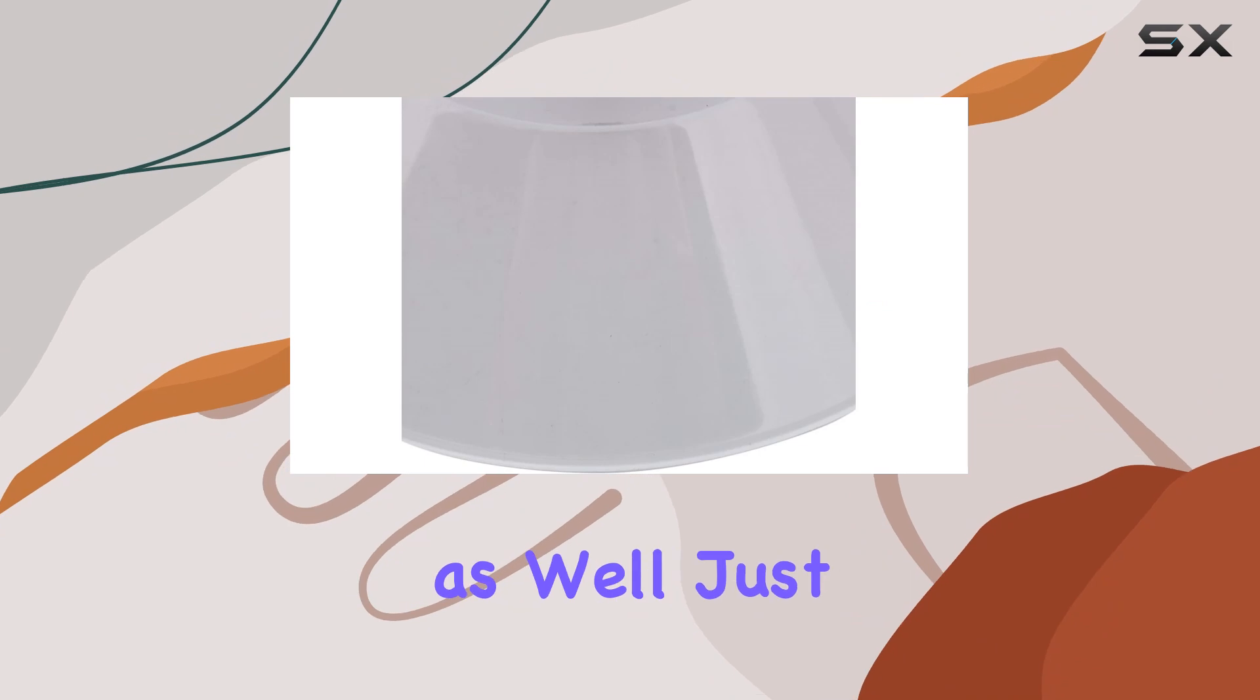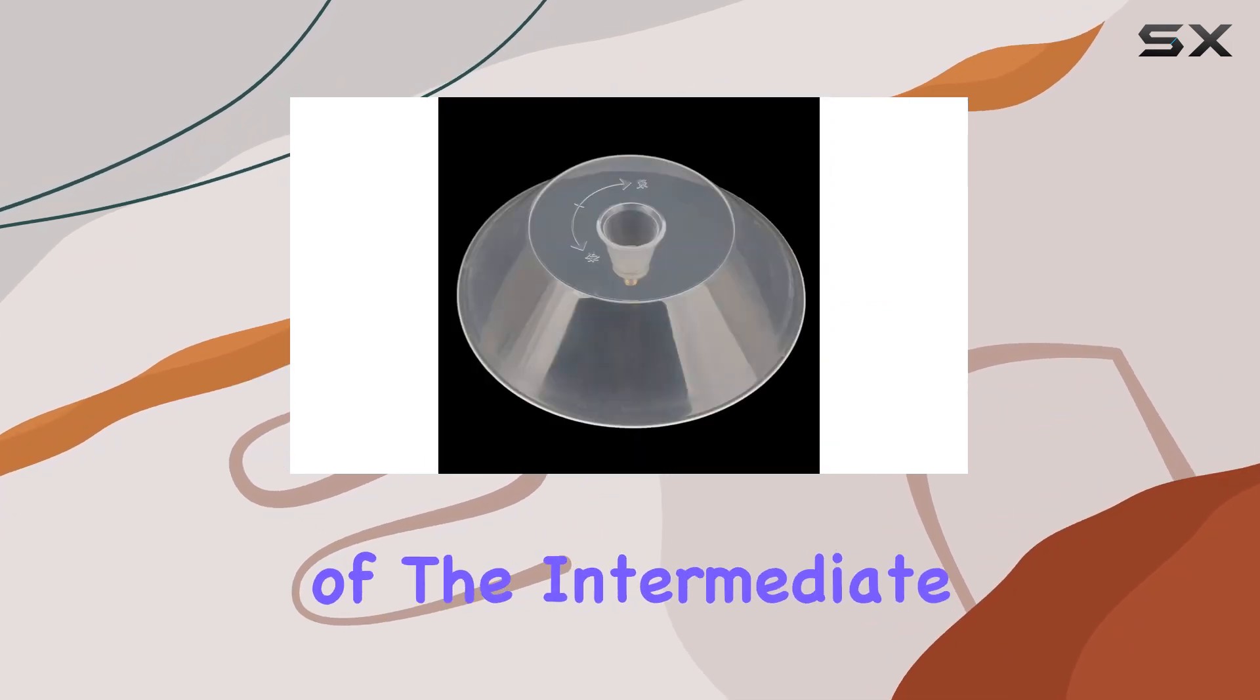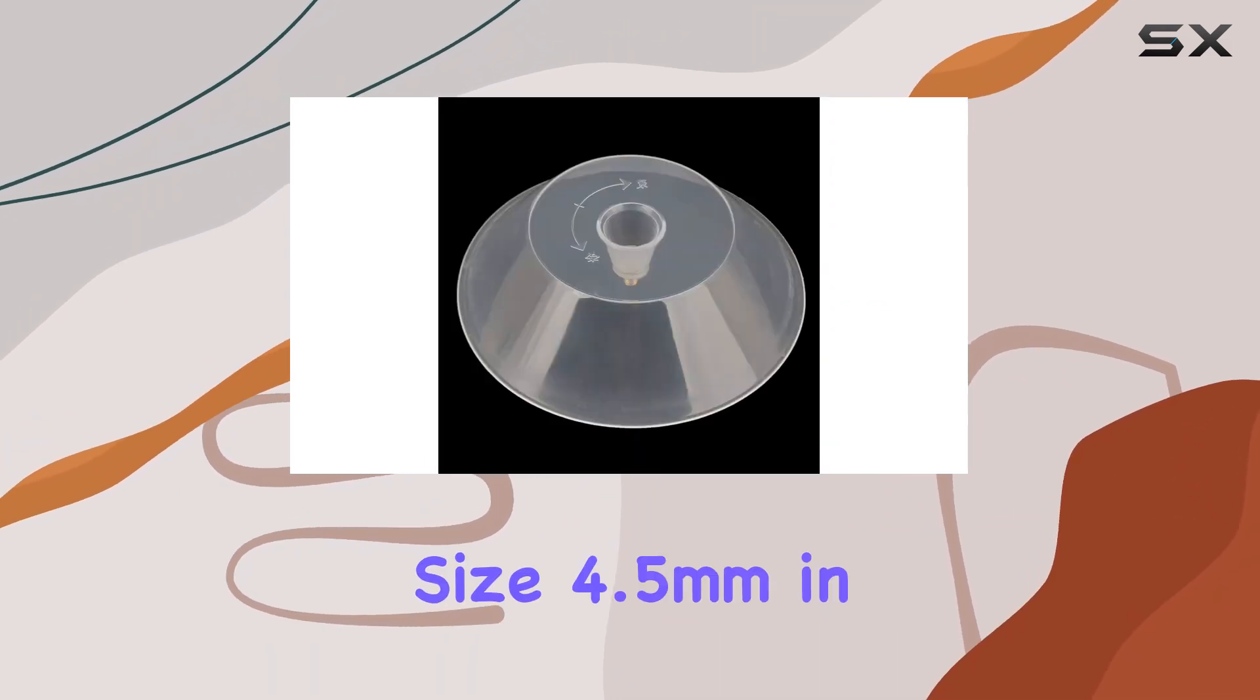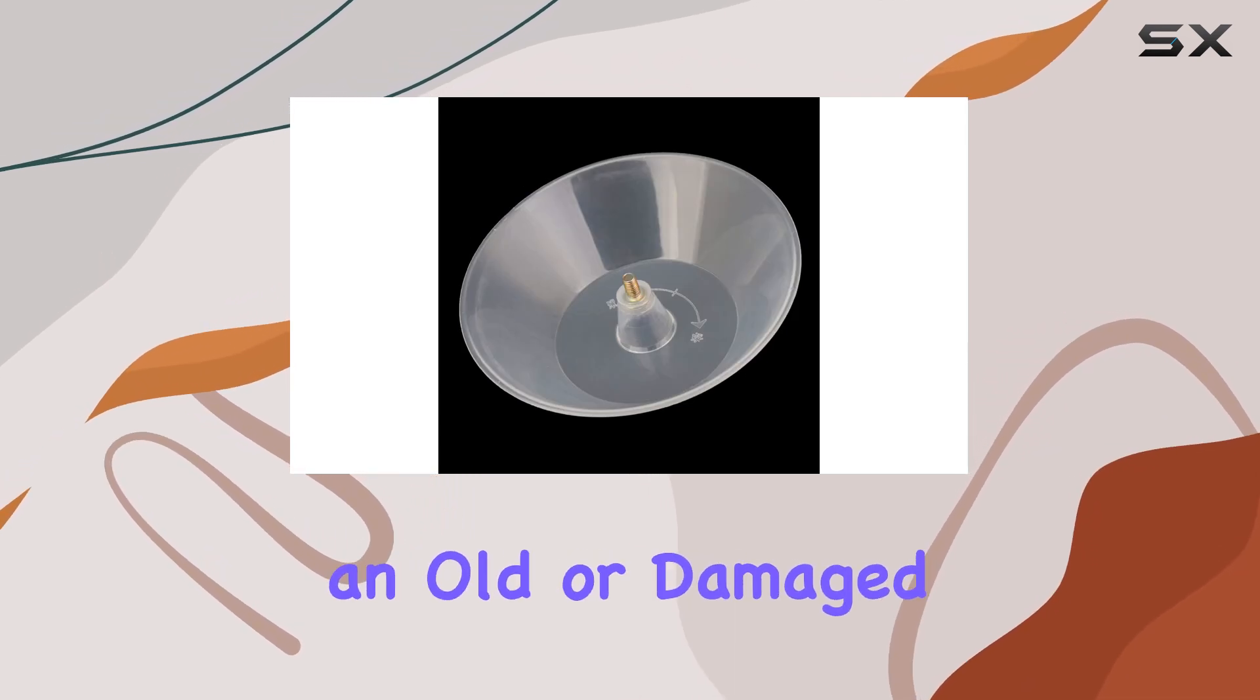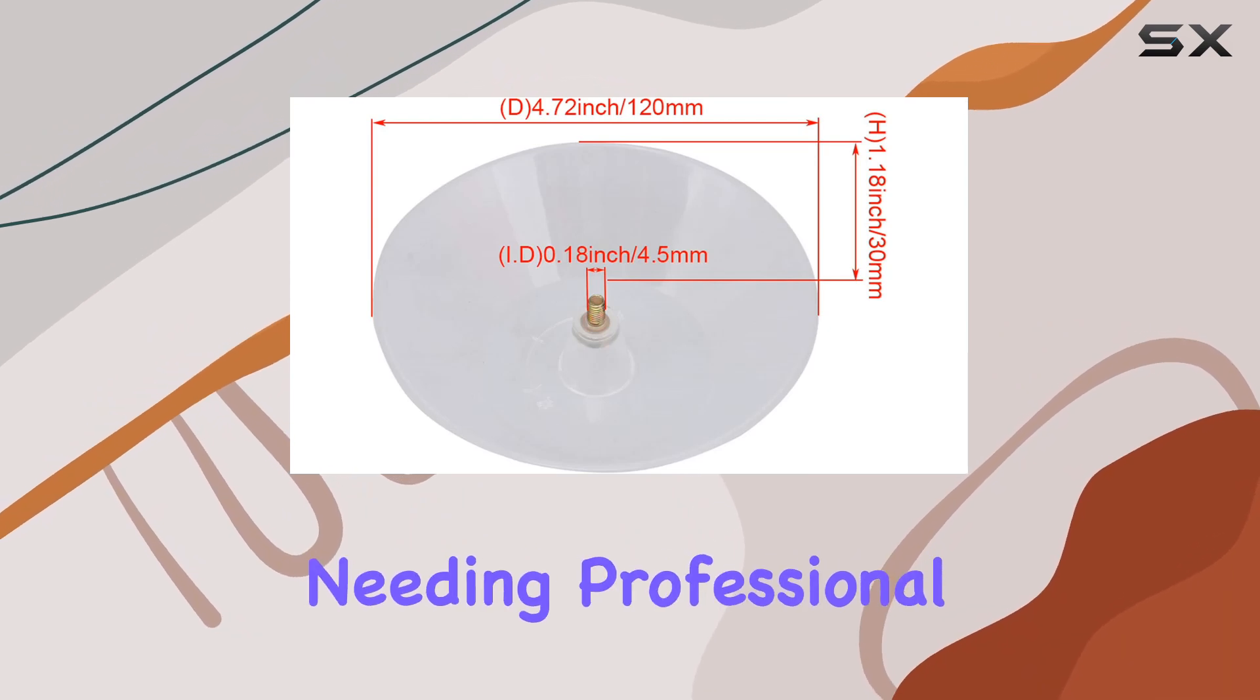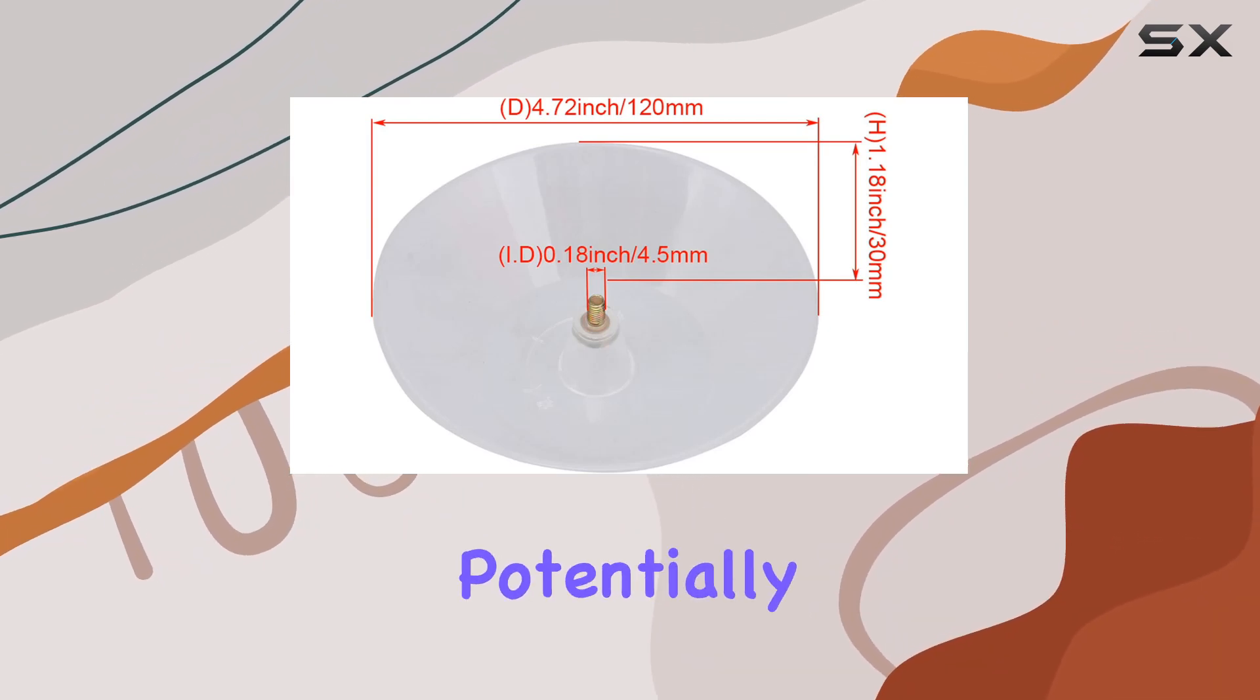Installation is straightforward as well. Just make sure to check the thread of the intermediate screw to ensure it's the right size, 4.5 millimeters in this case. This means that you can easily replace an old or damaged oil cup without needing professional help, saving you time and potentially money.